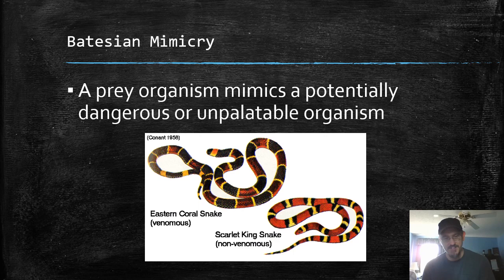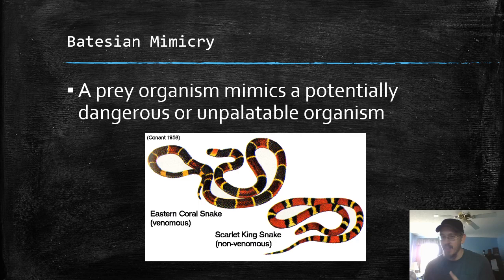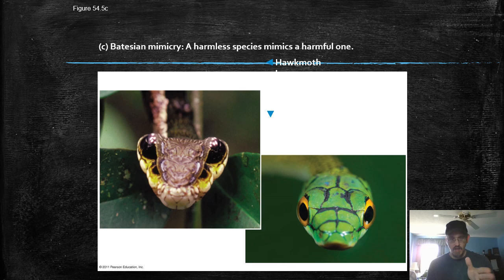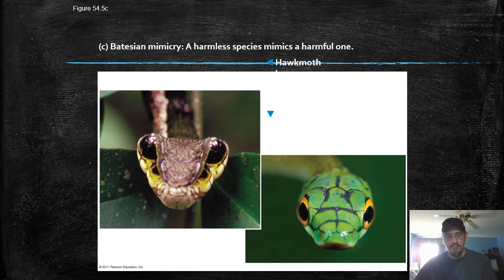Now let's compare that to a cool example of convergence: Batesian mimicry. Batesian mimicry is when a prey animal adopts the color patterns of another animal that might be poisonous or venomous. Here we see an Eastern coral snake — found in Arkansas, especially near Texas — and a scarlet king snake. Coral snakes are very, very venomous; king snakes not at all venomous, but they have evolved a similar color pattern to the coral snake. Therefore most predators see that and leave them alone. Here's another great example — a hawk moth larva: that is the butt of a caterpillar and it looks like the head of a snake. That's Batesian mimicry.